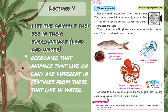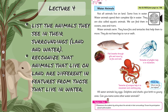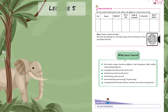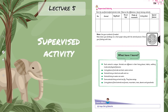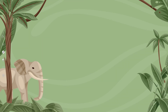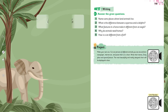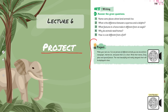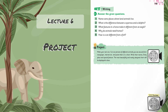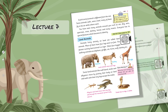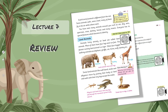In Lecture Number Four, we will again help students differentiate between land and water animals — issi tarike se hum land aur water animals ko differentiate kareenge. In Lecture Number Five, the students will do a supervised activity, and this will be a fun activity. In Lecture Number Six, we will do a project about animals.